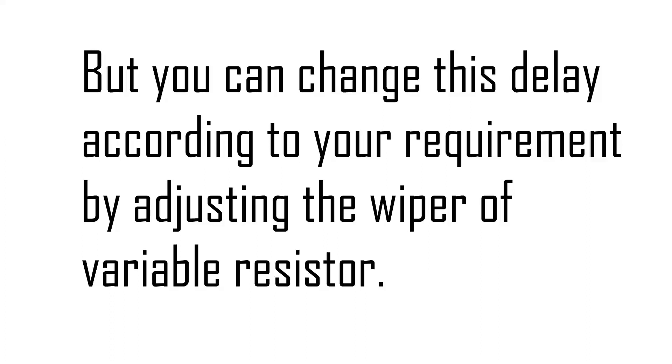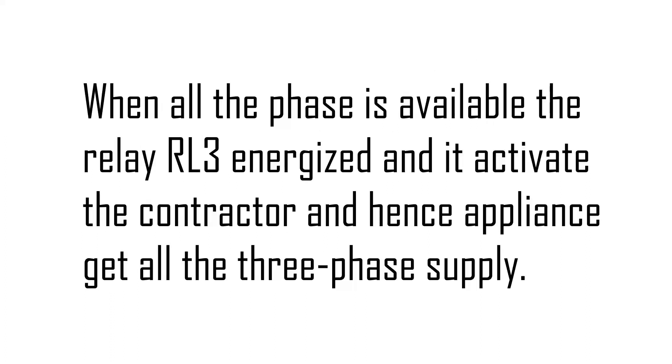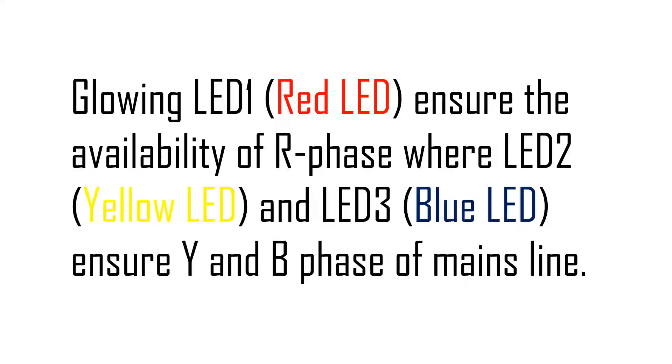But here, for this prototype circuit, I am using one fixed value of 680 kiloohm resistance. When all the phase is available, the relay RL3 energizes and it activates the contractor. And hence, the appliance gets all the 3-phase supply. Glowing LED 1, i.e. Red LED ensures the availability of R phase where LED 2 and LED 3 ensure Y and B phase of mains line.